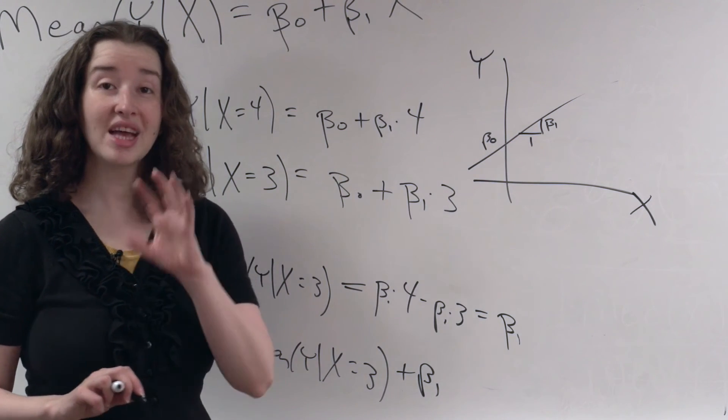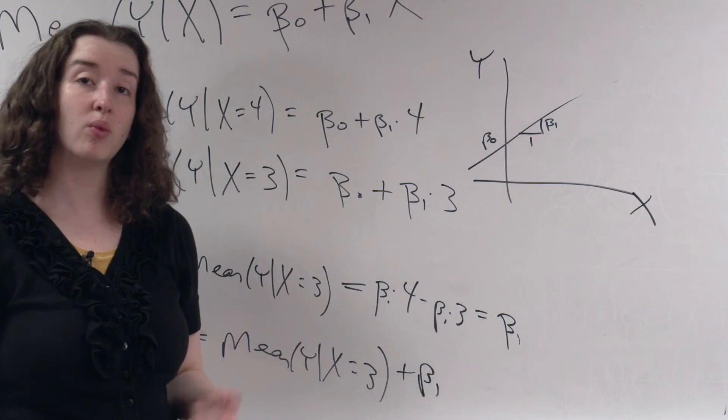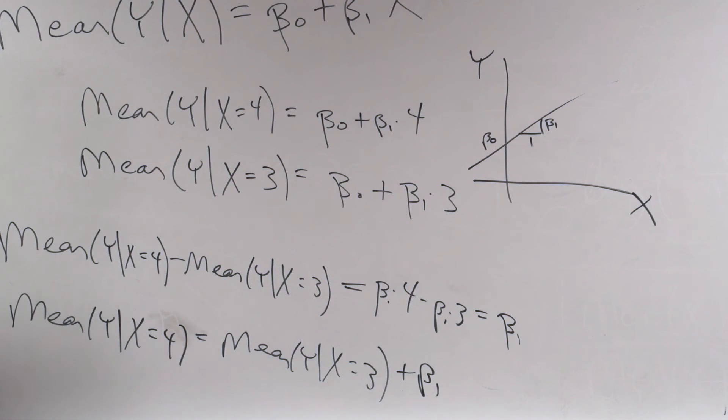So that's on the untransformed scale. That's if we log neither X nor Y. When X goes up by 1, the mean of Y goes up by beta 1. I'm saying that a lot of times so that it sinks in.